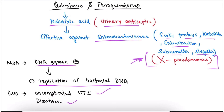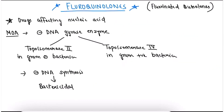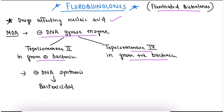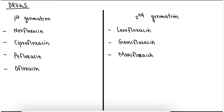Now coming to the main part: fluoroquinolones. Fluoroquinolones are fluorinated quinolones and come under a class of antibiotics known as drugs affecting nucleic acid. The mechanism of action is inhibition of DNA gyrase enzyme — specifically topoisomerase II in gram-negative bacteria and topoisomerase IV in gram-positive bacteria — thereby inhibiting DNA synthesis. Therefore, fluoroquinolones are bactericidal.